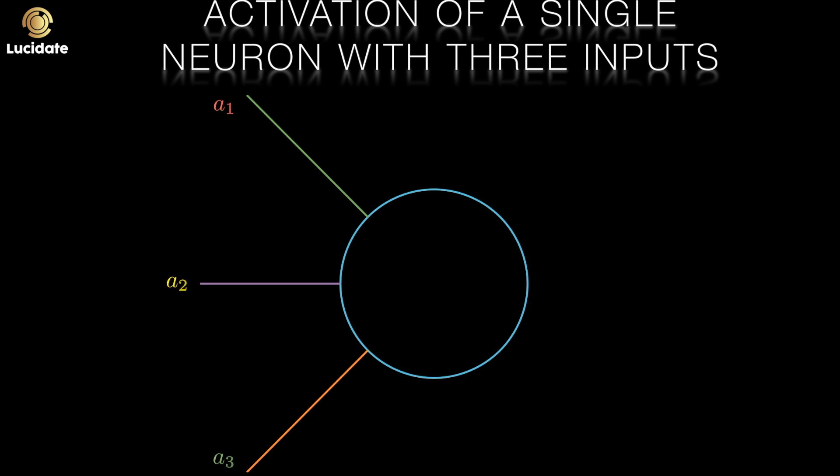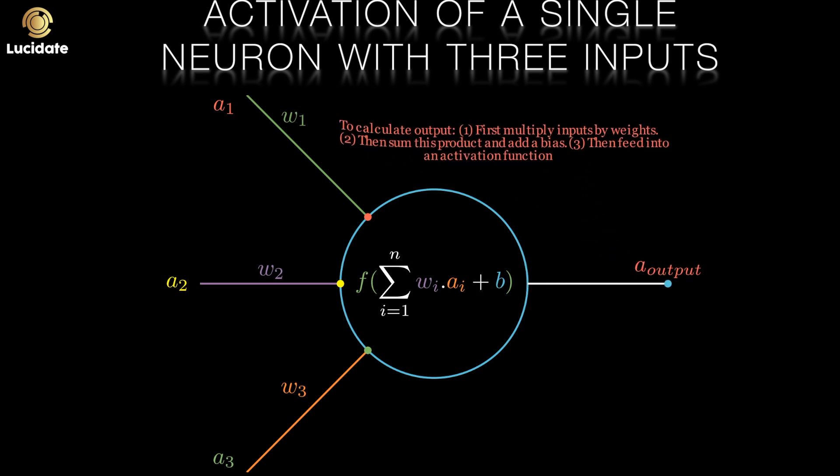Each of these inputs is multiplied by a weight, w1, w2 and w3. A bias term, b, is added and these terms are fed into an activation function to generate the output or activation of this neuron.